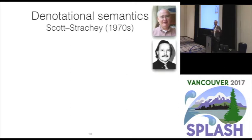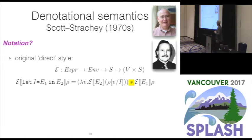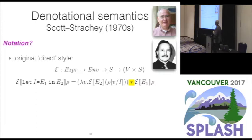Let me recall some early work that led to the approach I'll present. This is Dana Scott and Christopher Strachey, who developed denotational semantics at the end of the 1960s and start of the 1970s. Here's a little example — a direct style of semantics modeling the dynamic semantics of expression evaluation as a function from environments and stores to pairs of values and stores, to reflect that expression evaluation may have a side effect. This is in Scott and Strachey's original notation from 1971.